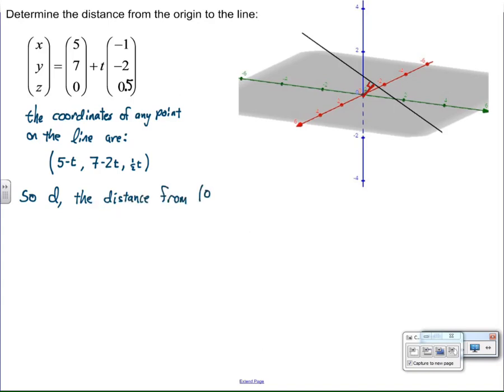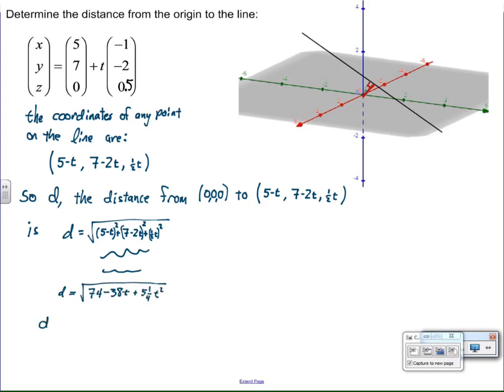So d will represent the distance from 0, 0, 0 to any point on the line. And therefore, using the Pythagorean theorem on steroids, we get, and I saved you the trouble of having to watch all this miserable algebra. I did the work on paper and transferred it over here because I trust we can foil and collect like terms several years ago.